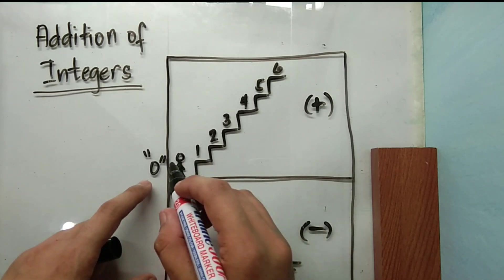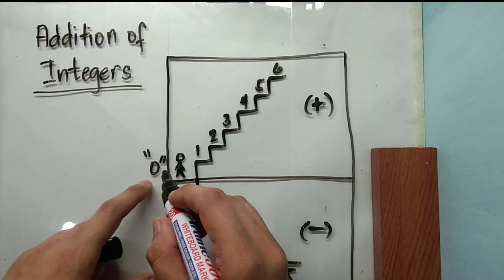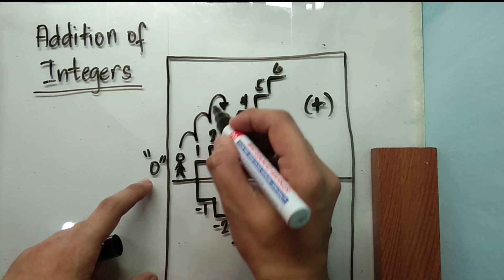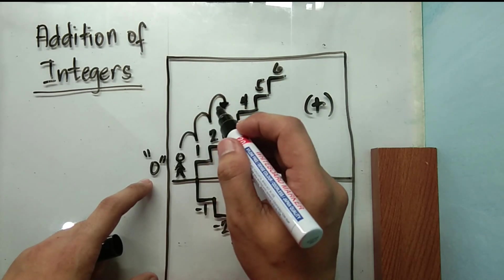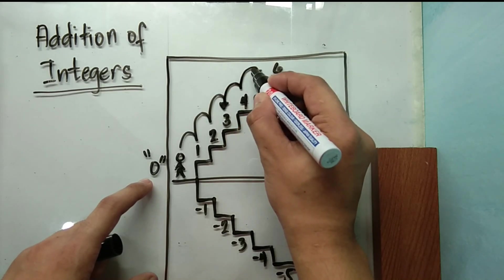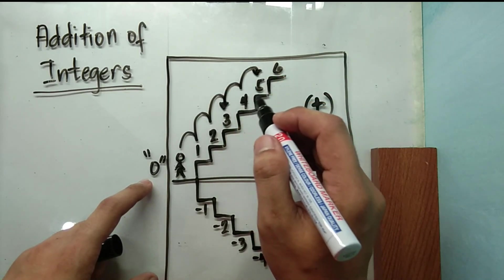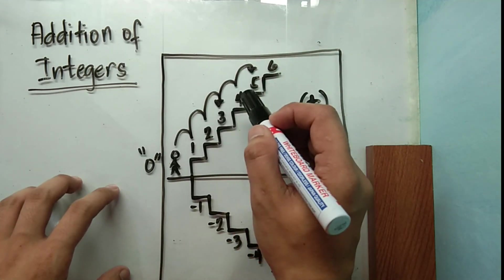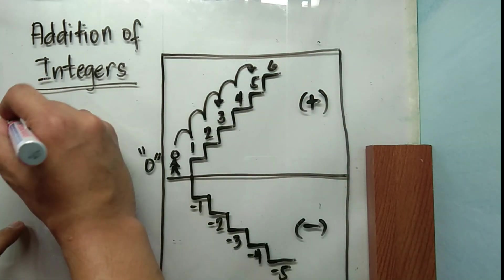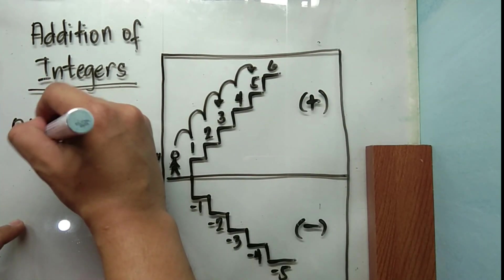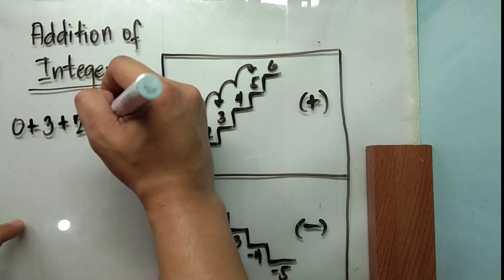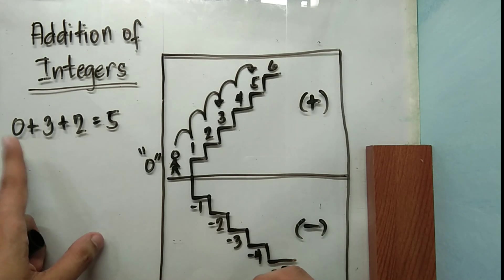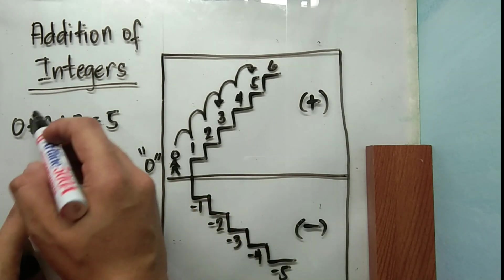Now from zero, if you are asked to walk three steps upstairs—one, two, and three—and another two steps going up—one, two—then your position now is on the positive five value. So this into numbers would mean zero plus three plus two is equal to five. In this case, you may disregard zero since it doesn't have a value.